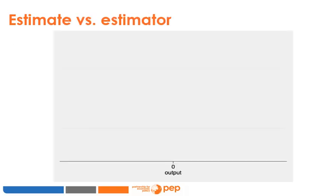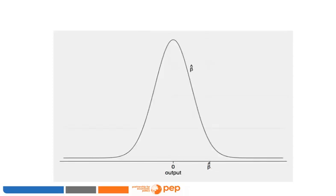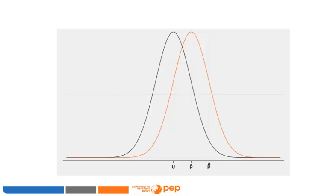Now let's say we know the standard error value and ask: how likely is it that my estimate comes from an estimated distribution centered on zero? In other words, is the true treatment effect zero? A point estimate is never exactly zero; there are at least two potential reasons for this: first, natural variation of the estimator around the true value; second, maybe the true treatment impact is not zero. We are not really interested in the one point estimate we just observed — we know it is not the true value of the parameter.